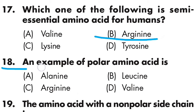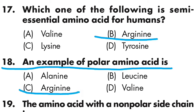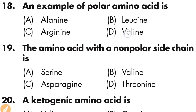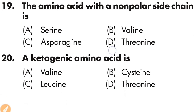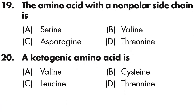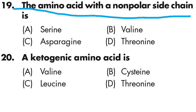Question number eighteen/nineteen: an example of polar amino acids, and the amino acid with a non-polar side chain. The amino acid with a non-polar side chain is valine — Option B is correct: valine is the amino acid with a non-polar side chain.